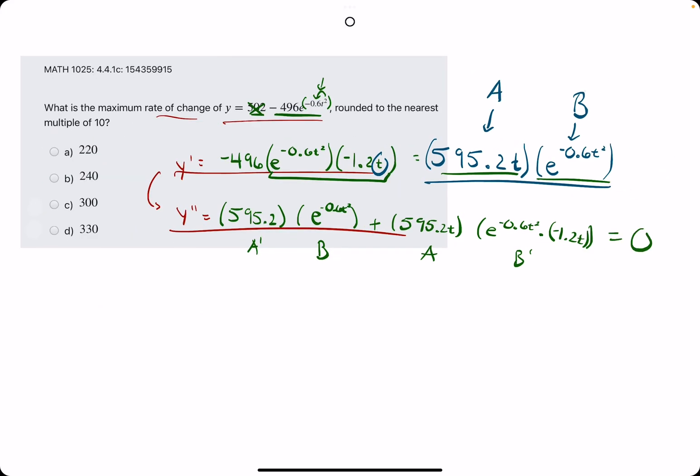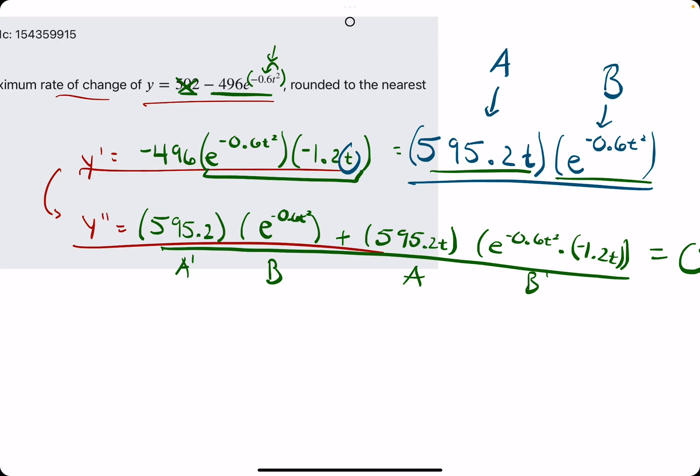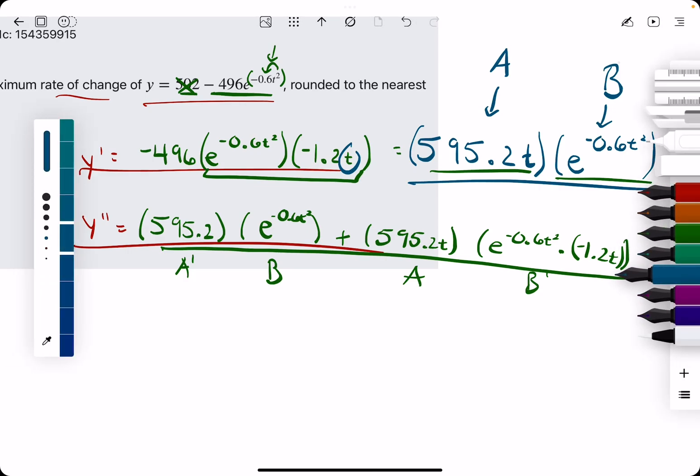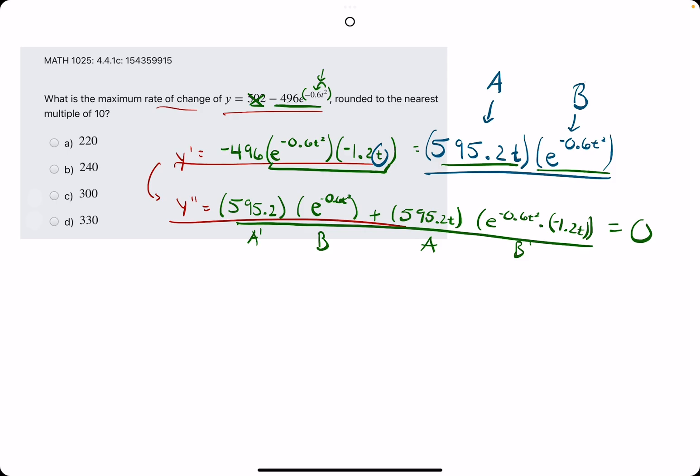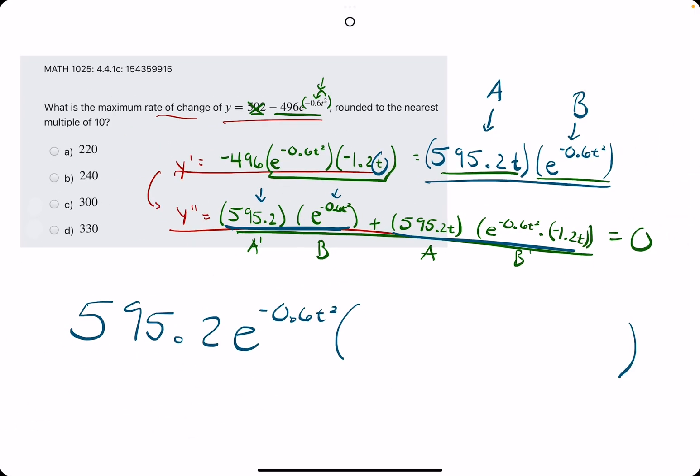Now, we set this equal to 0, and the goal is to solve for t. Now, you might ask, how do we solve for t in this equation? It's very similar to one example we saw in the previous quiz, and that is we want to factor out a greatest common factor. What do these two big terms have in common? They both have the 595.2, and they both have the main e term. And so, we want to pull out 595.2e to the negative 0.6t squared. And when we do that, what do we have left? So, we pulled out all of that from the first term. So, really, that just leaves us with 1 for that term.